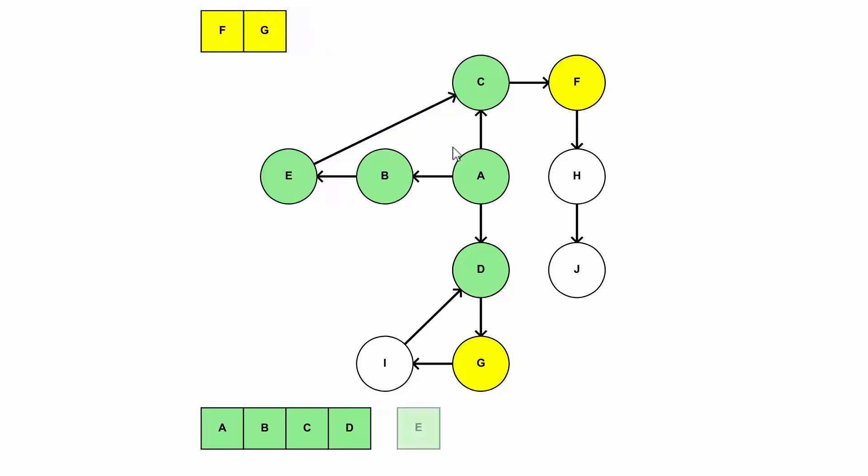F has a child of H, so we add that. G has a child of I, so we add that. H has a child of J, and I points to D, which we've already visited.